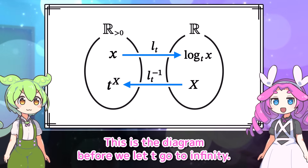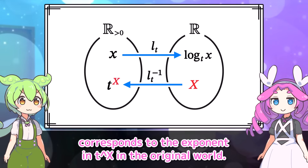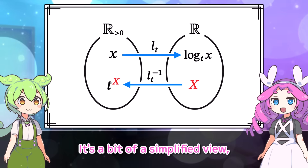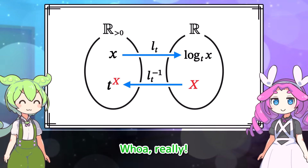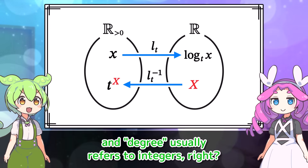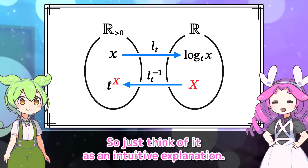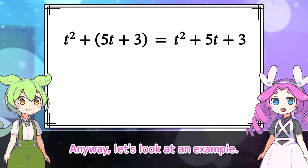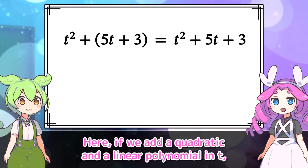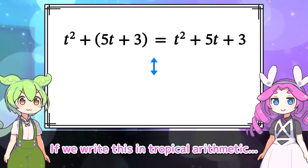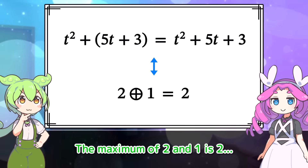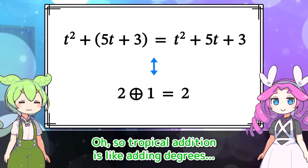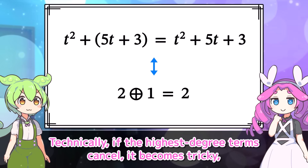This is the diagram before we let t go to infinity. In the tropical world, what we call x corresponds to the exponent in t to the x in the original world. A number in the tropical world can be interpreted like the degree of a polynomial — though since we're dealing with real numbers, calling it a degree isn't strictly accurate, so just think of it as an intuitive explanation. For example, if we add a quadratic and a linear polynomial in t, the result is a quadratic. In tropical arithmetic, adding a quadratic and a linear gives a quadratic — the maximum of 2 and 1 is 2. So tropical addition is like adding degrees, only intuitively.